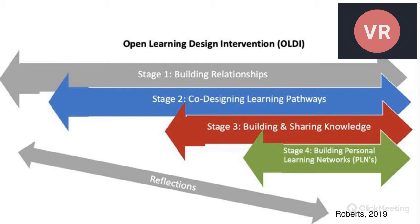The findings from this research helped me think about the open learning design intervention, which I highly recommend in this transition time when we're thinking about how do we transition from face-to-face to online learning environments. The open learning design has four stages and is all encompassed with reflections — reflections happen all the time, by me as a researcher and also as an instructor or teacher. The four stages are: stage one, building relationships; stage two, co-designing learning pathways; stage three, building and sharing knowledge; stage four, building personal learning networks.